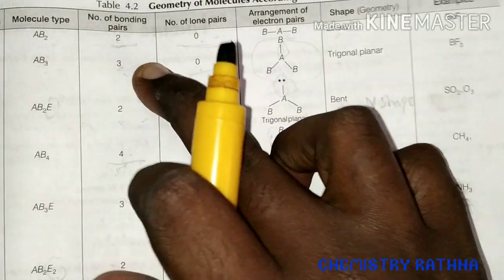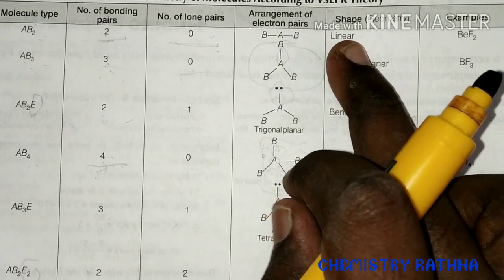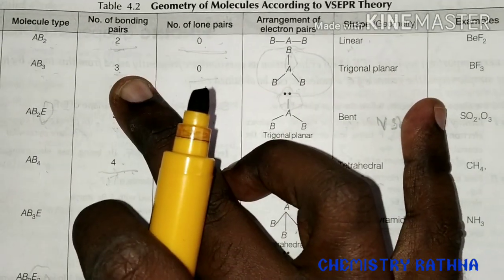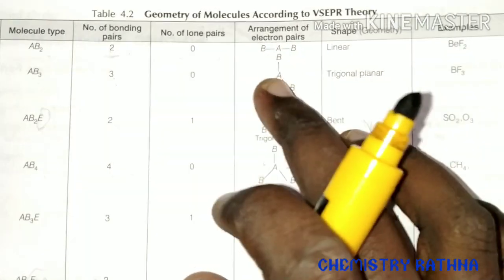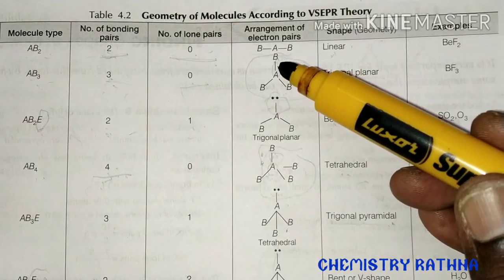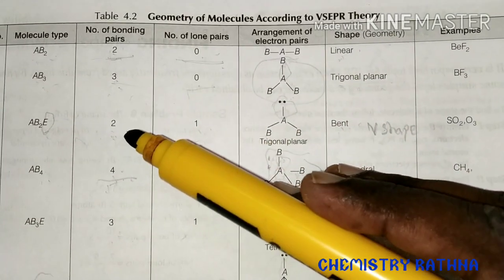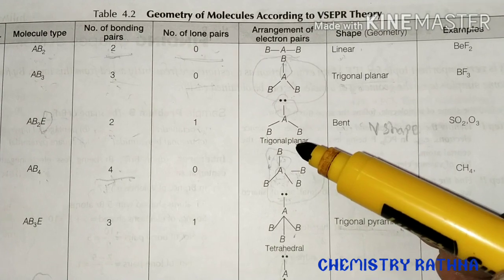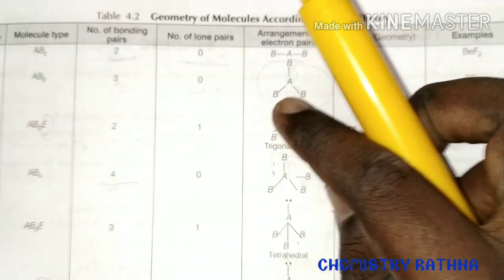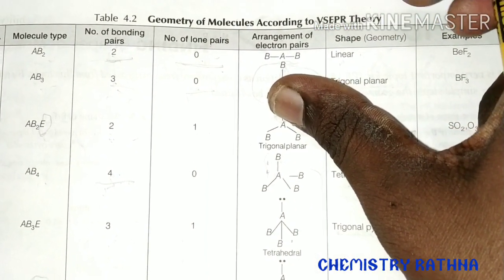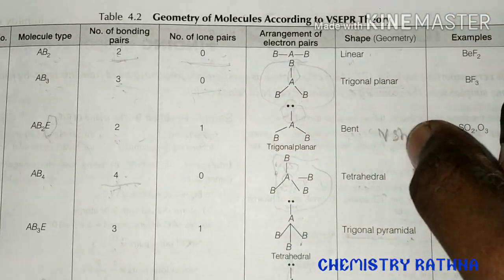The bond pair is 3. There are three bond pairs and one lone pair, or two bond pairs and one lone pair. What is the trigonal planar geometry? It is bent shape. If you consider the lone pair, it is trigonal planar. Without the lone pair, it is bent shape — that is V shape.